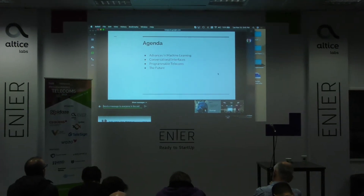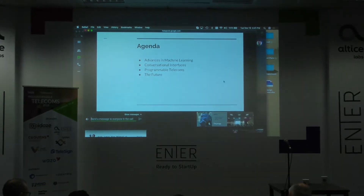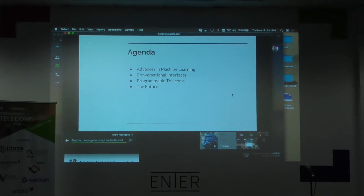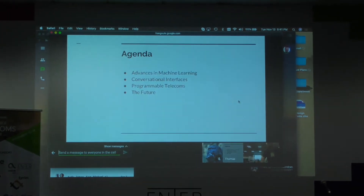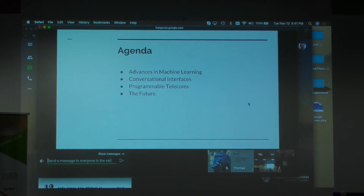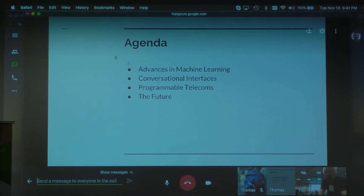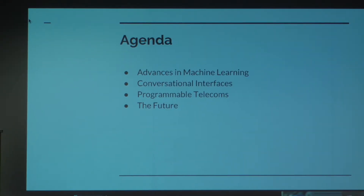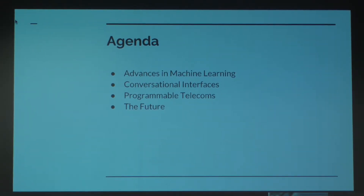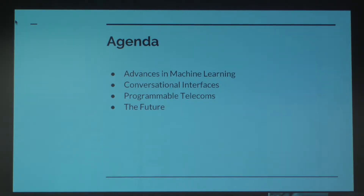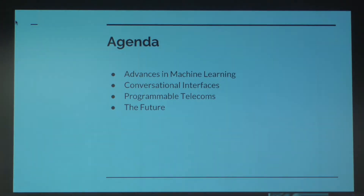For example, the perceptron — which is the precursor to a lot of the deep learning models we see today, if not all of them — was invented in 1957 by Frank Rosenblatt. So if these models have been around for such a long time, why is it that only now are we seeing the progress we're seeing across the industry?